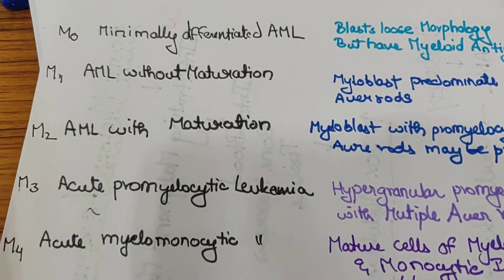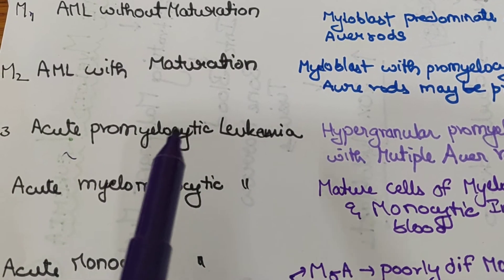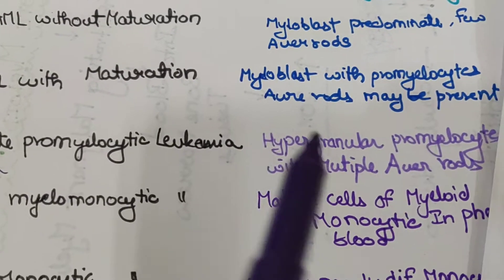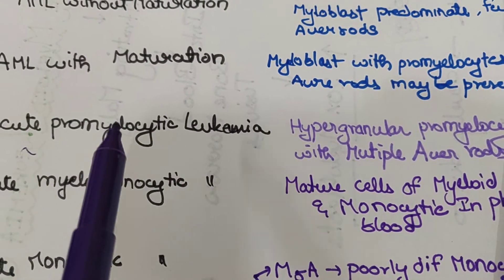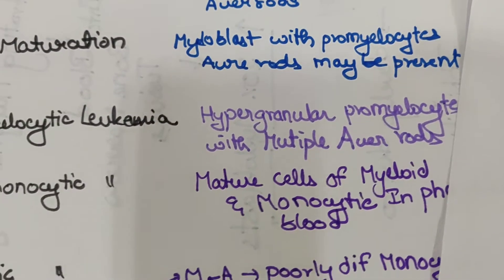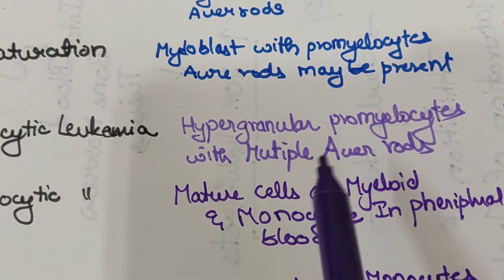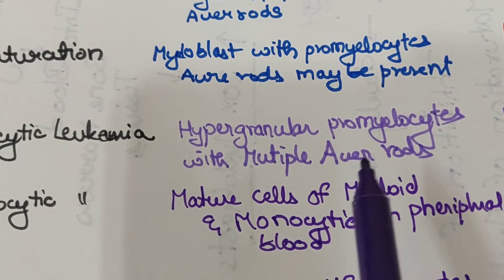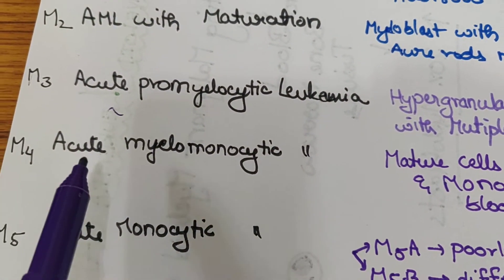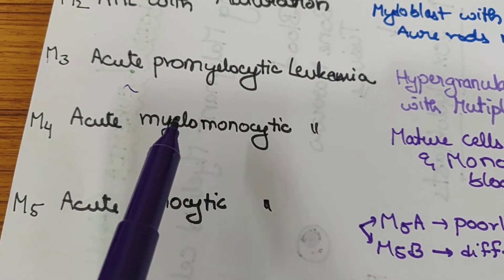M3 is Acute Promyelocytic Leukemia, where promyelocytes are predominant. These have a granular structure — hypergranular promyelocytes with multiple Auer rods are characteristic of this type.